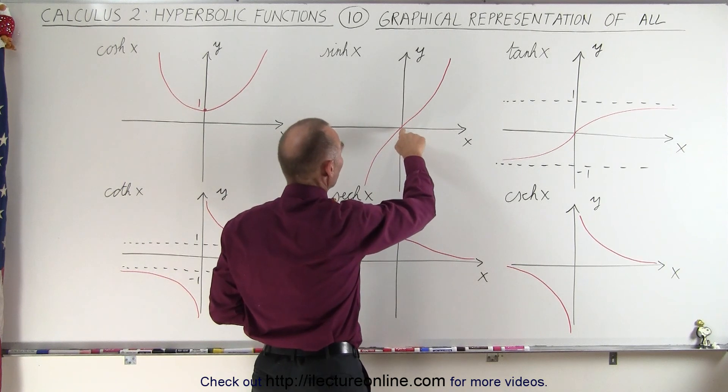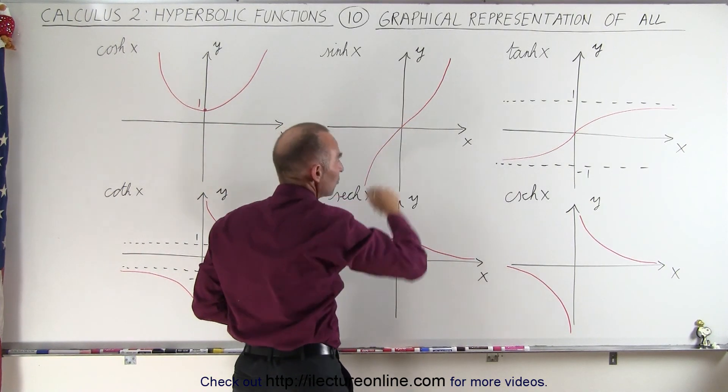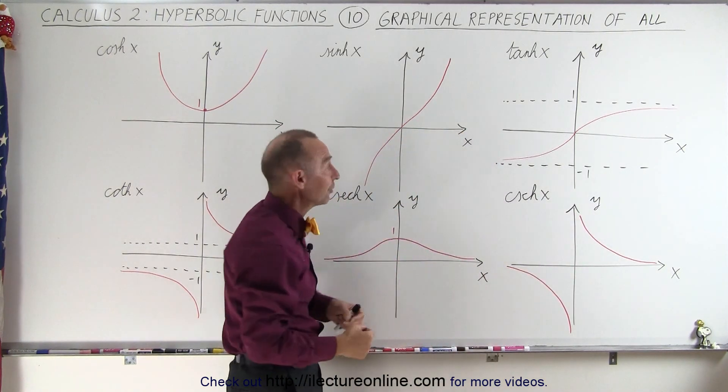And here you can see that at the middle, we have the function being equal to 0 for the hyperbolic sine of x, which means it will be undefined at x equals 0 for the hyperbolic cosecant, because it's the inverse.